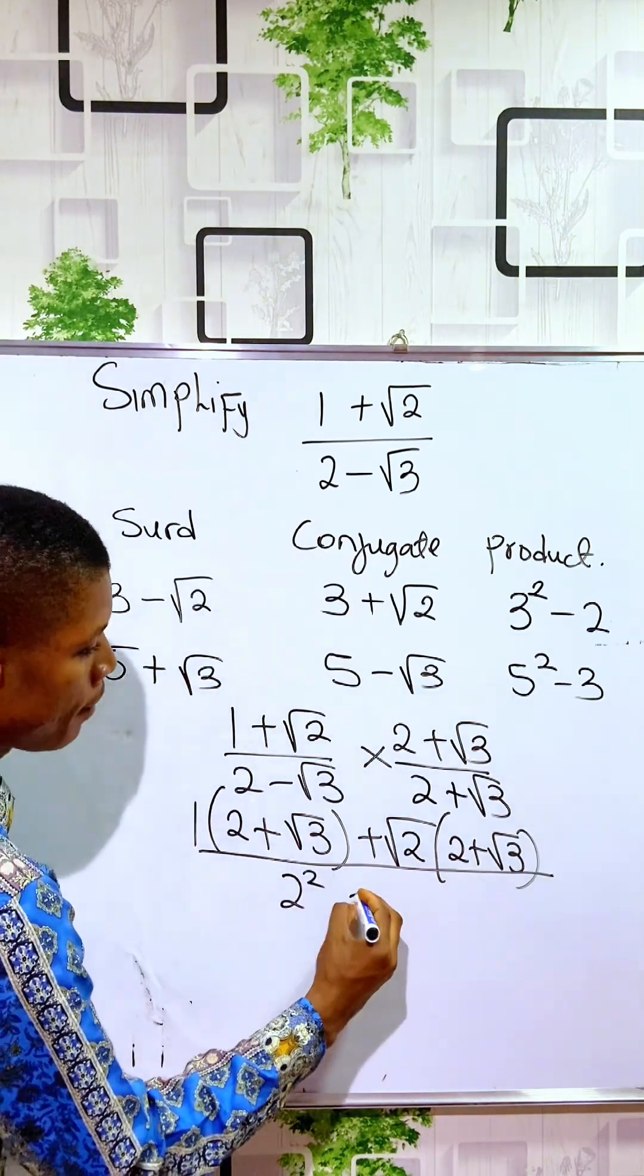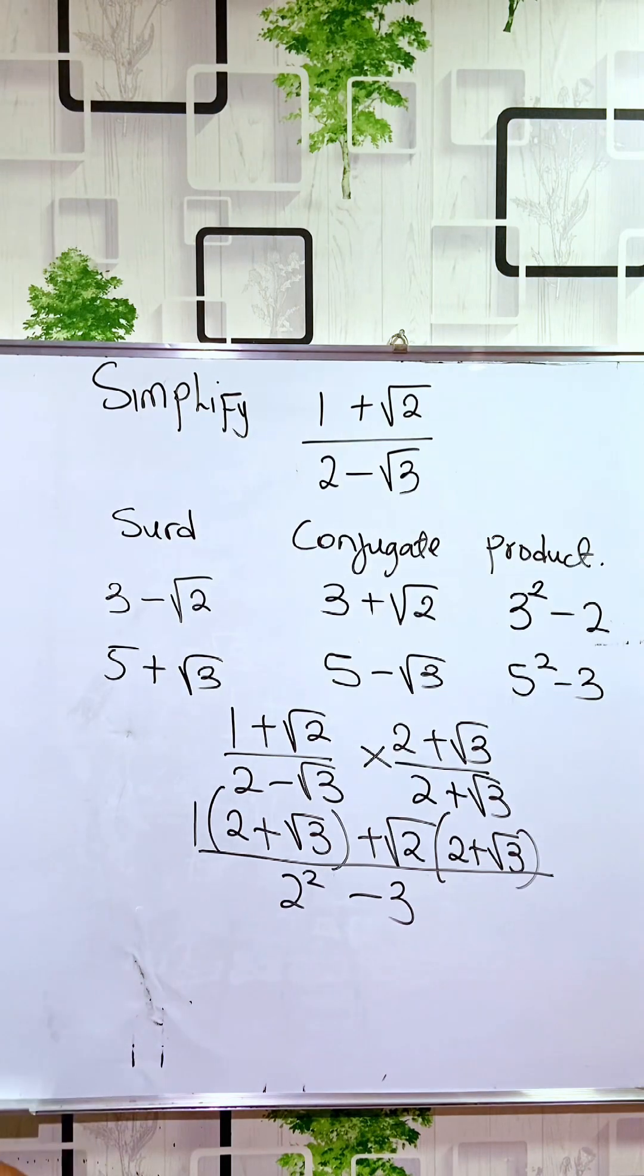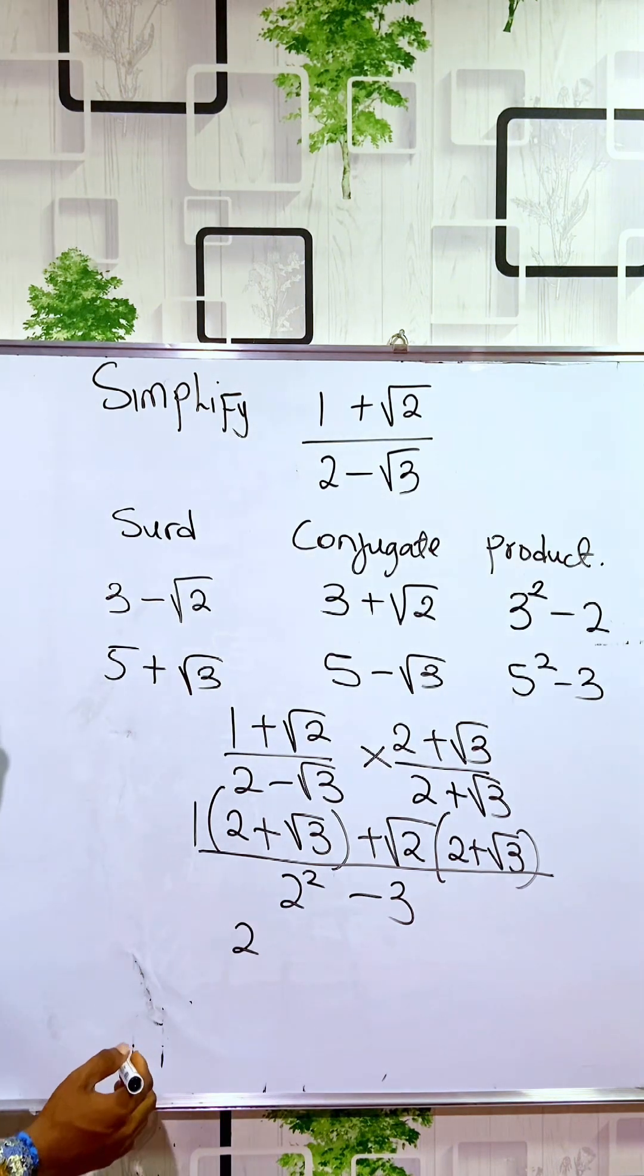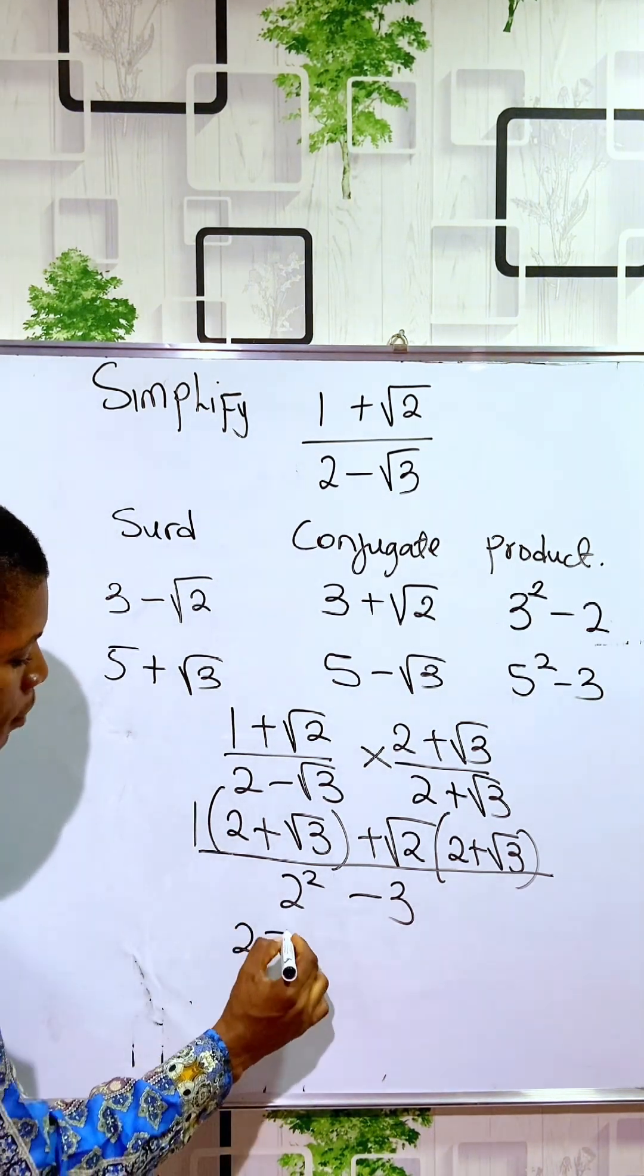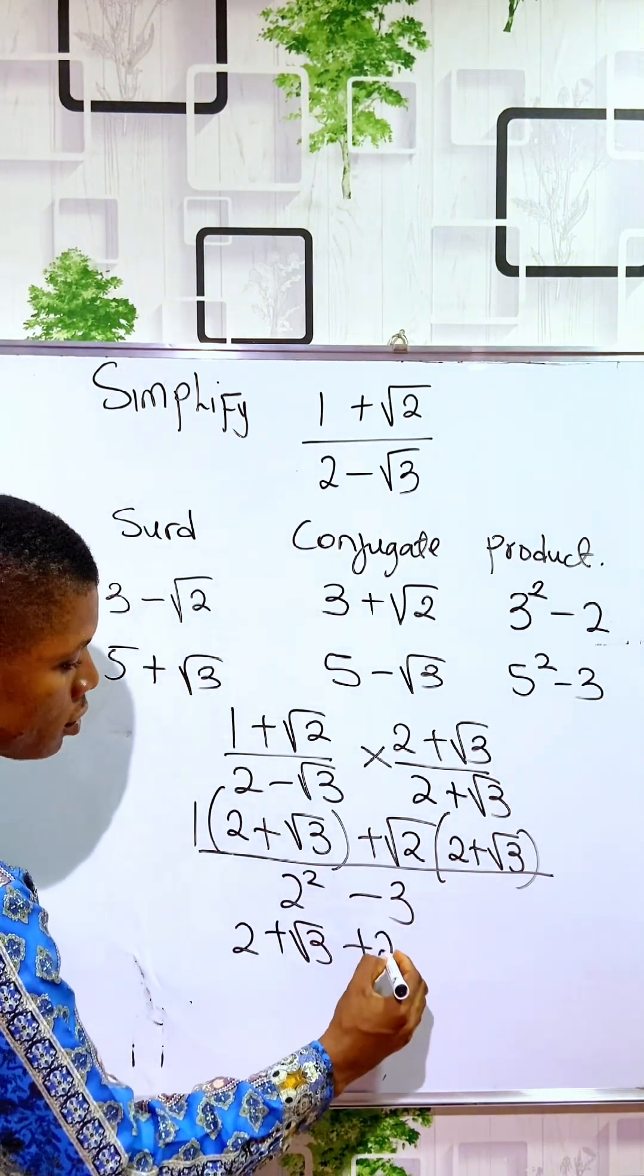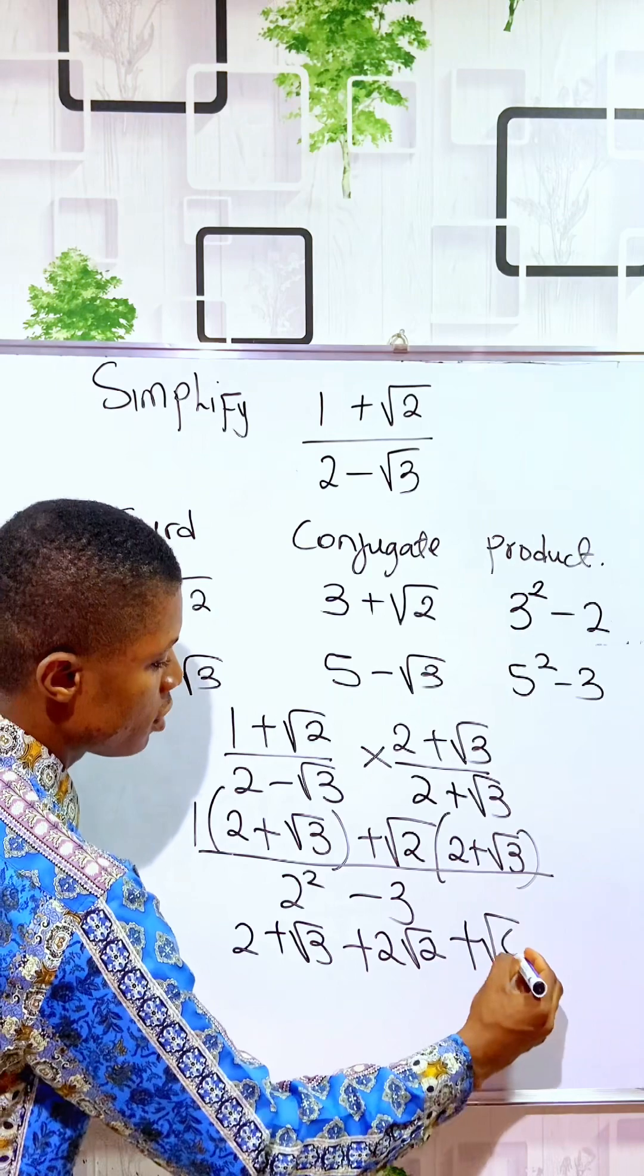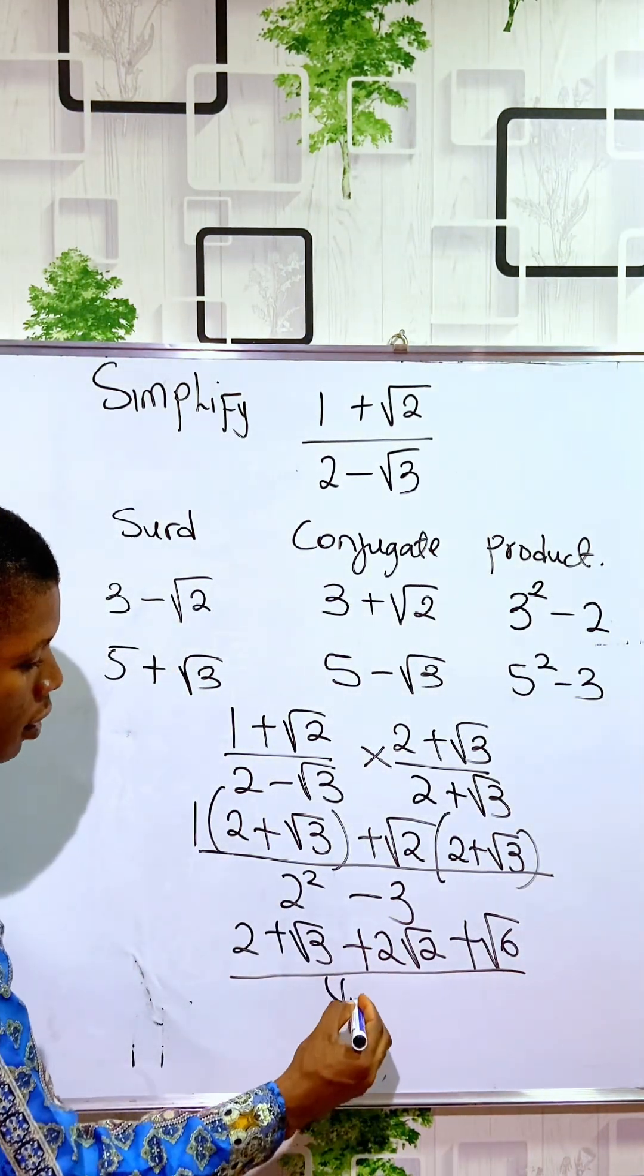And this will give us: 1 times 2 gives you 2, plus √3. Then √2 times 2 will give you plus 2√2. √2 times √3 will give you plus √6, divided by 2 squared is 4 minus 3.